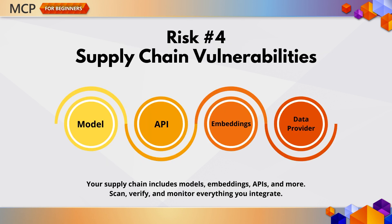Let's not forget about supply chain security. When building AI apps, your supply chain isn't just code — it includes models, embeddings, APIs, and context providers. Before integrating any component, verify its source. Use secure deployment pipelines. Scan for vulnerabilities. And monitor for changes continuously. Tools like GitHub Advanced Security, Azure DevOps, and CodeQL are key allies here. Remember, MCP inherits your environment's existing security posture, so the stronger your overall setup, the safer your MCP implementation will be.